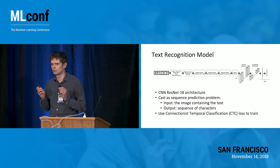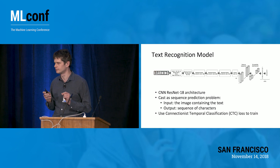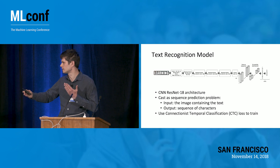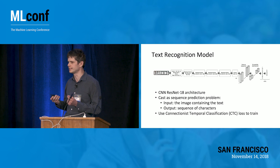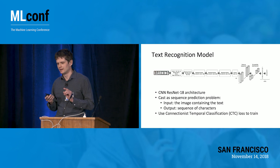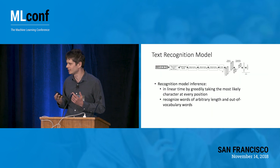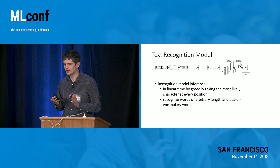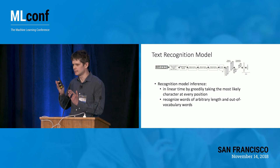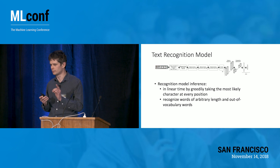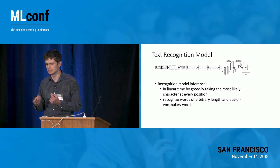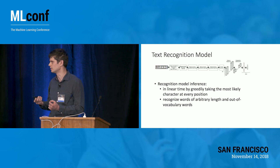Once all words are detected with rectangles drawn around them, you do text recognition. We use a convolutional neural network based on ResNet-18 architecture and cast the problem as a sequence prediction problem, where the image contains a set of characters and we want to output them. We used Connectionist Temporal Classification (CTC) loss to train this neural network. Because we use sequence recognition, we can recognize words of arbitrary lengths and out-of-vocabulary words — that's very important. The network does this by scanning over the feature map on the last layer and for each column predicting the most likely character at that position.